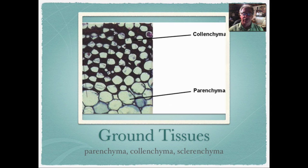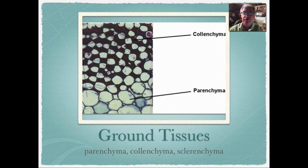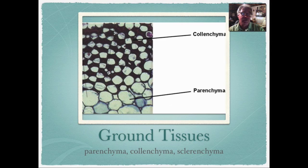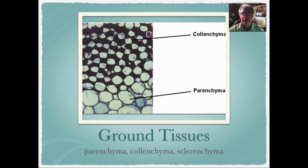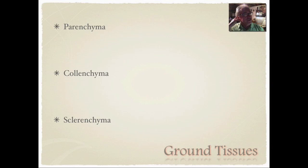Now we're going to get into the ground tissues. There are three different types: parenchyma, collenchyma, and sclerenchyma. They're kind of funny words, but they have very different characteristics. You'll find them all over the plant. They're very specialized and allow the plant to grow, mature, repair itself, and move things around. Moving resources from different parts of the environment to certain locations in the plant was a pretty big strategy for organisms.